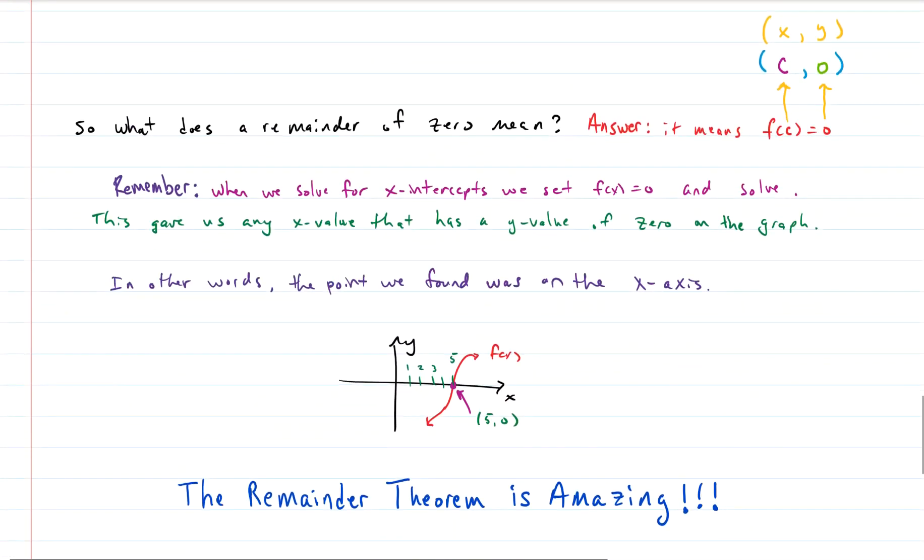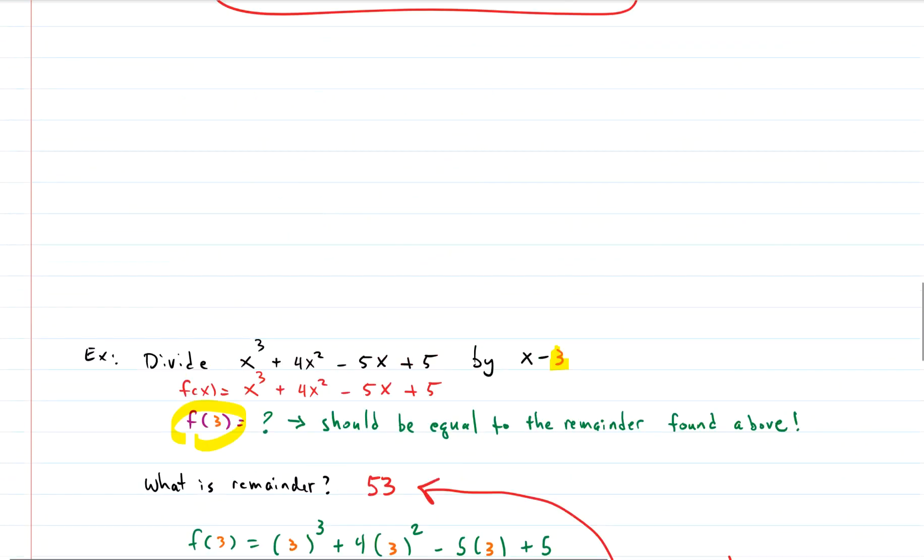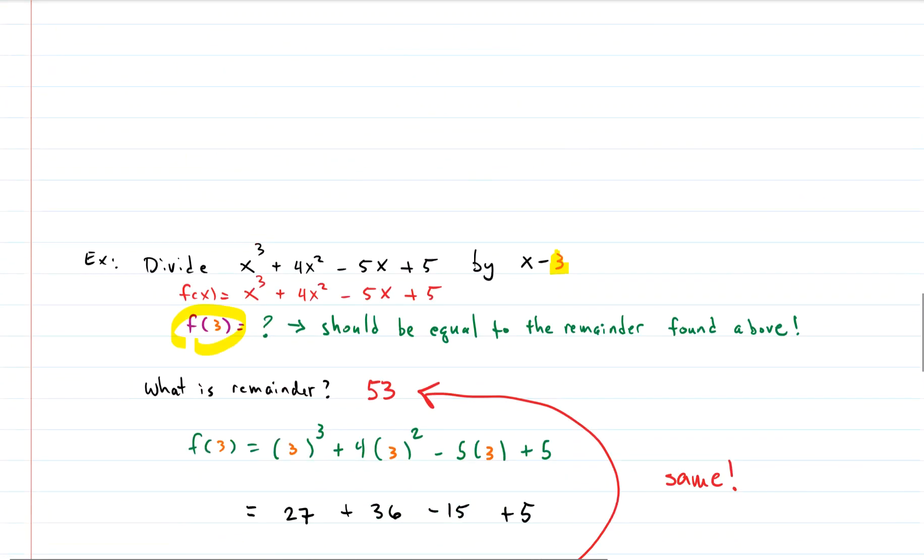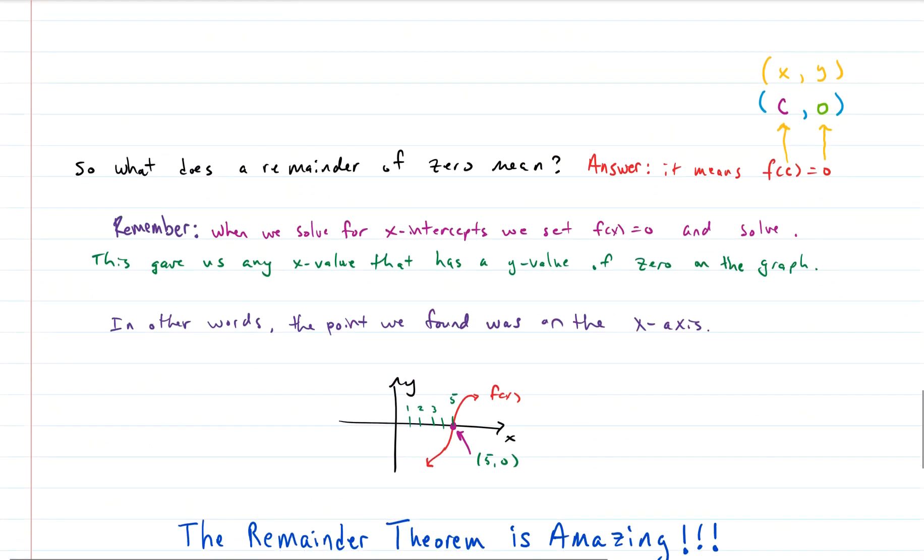Here's the discussion. So when you have a remainder of 0, what does that really mean? Right? So let's go back up here for a second. Remember this was the remainder right here. When that remainder is 0, what does that mean? Well, according to our theorem, that means that f of c, which was the number that you were dealing with, f of that number. So if you plug that number in to the function, you get 0 out. That's what a 0 remainder means.